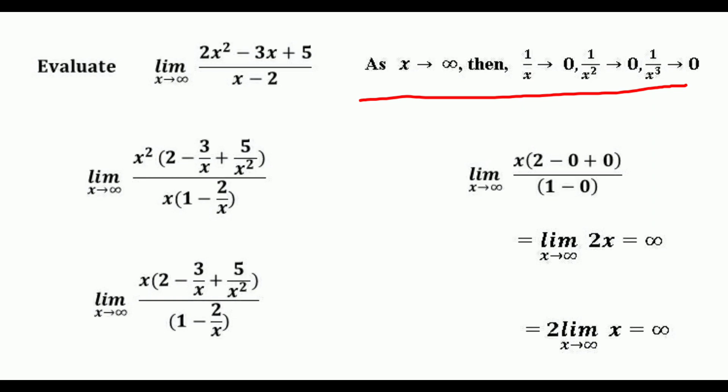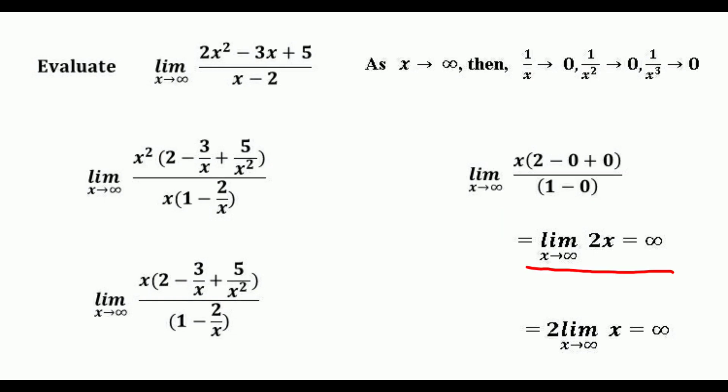Substituting 1/x, 1/x², and 1/x³ as 0, the x² in the numerator and x in the denominator partially cancel, leaving x · (2 - 0 + 0) / (1 - 0), which equals limit of 2x as x approaches infinity, or 2 · limit of x as x approaches infinity. As x approaches infinity, 2x approaches infinity. In this case, the highest degree in the numerator (degree 2, that is 2x²) is greater than the highest degree in the denominator (degree 1, that is x), so the limit to infinity is plus or minus infinity.